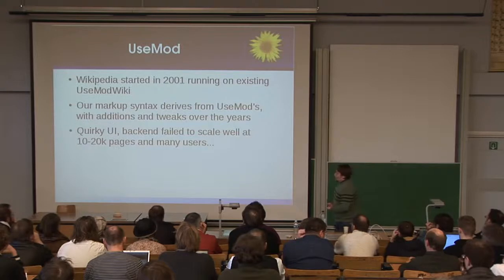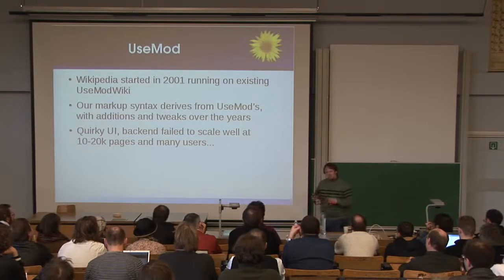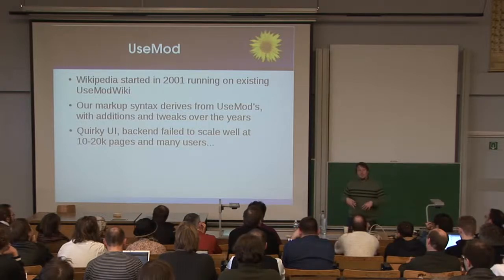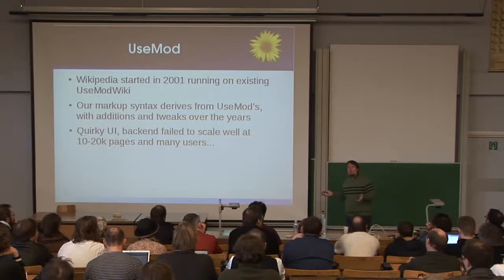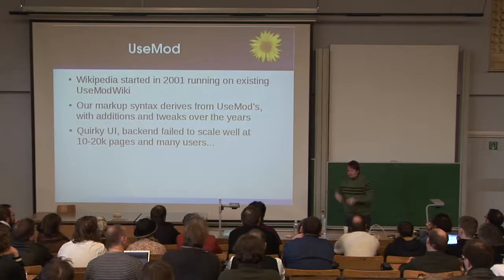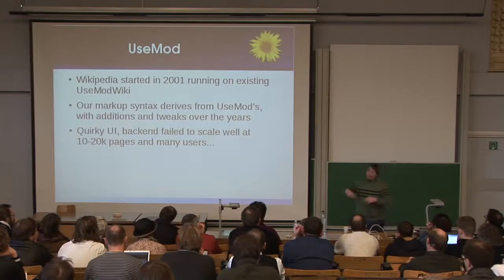The basic problem with UseModWiki was that it just really wasn't built to scale. For a small site, it was fine. But after about a year, when we got to 10,000–20,000 pages with a lot of people editing simultaneously, the system didn't have a good way of protecting against multiple simultaneous edits. It theoretically had a lock file — whenever someone made a save, it set the lock file, and you'd wait until it was removed. But sometimes it would forget to remove the lock file, so it would just sort of break for a few hours until someone went in and fixed it.